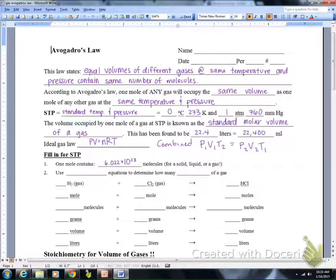Let's just remind ourselves that one mole contains 6.022 times 10 to the 23rd molecules. We're going to use the ideal gas equation to help us determine how many moles of a gas we have.